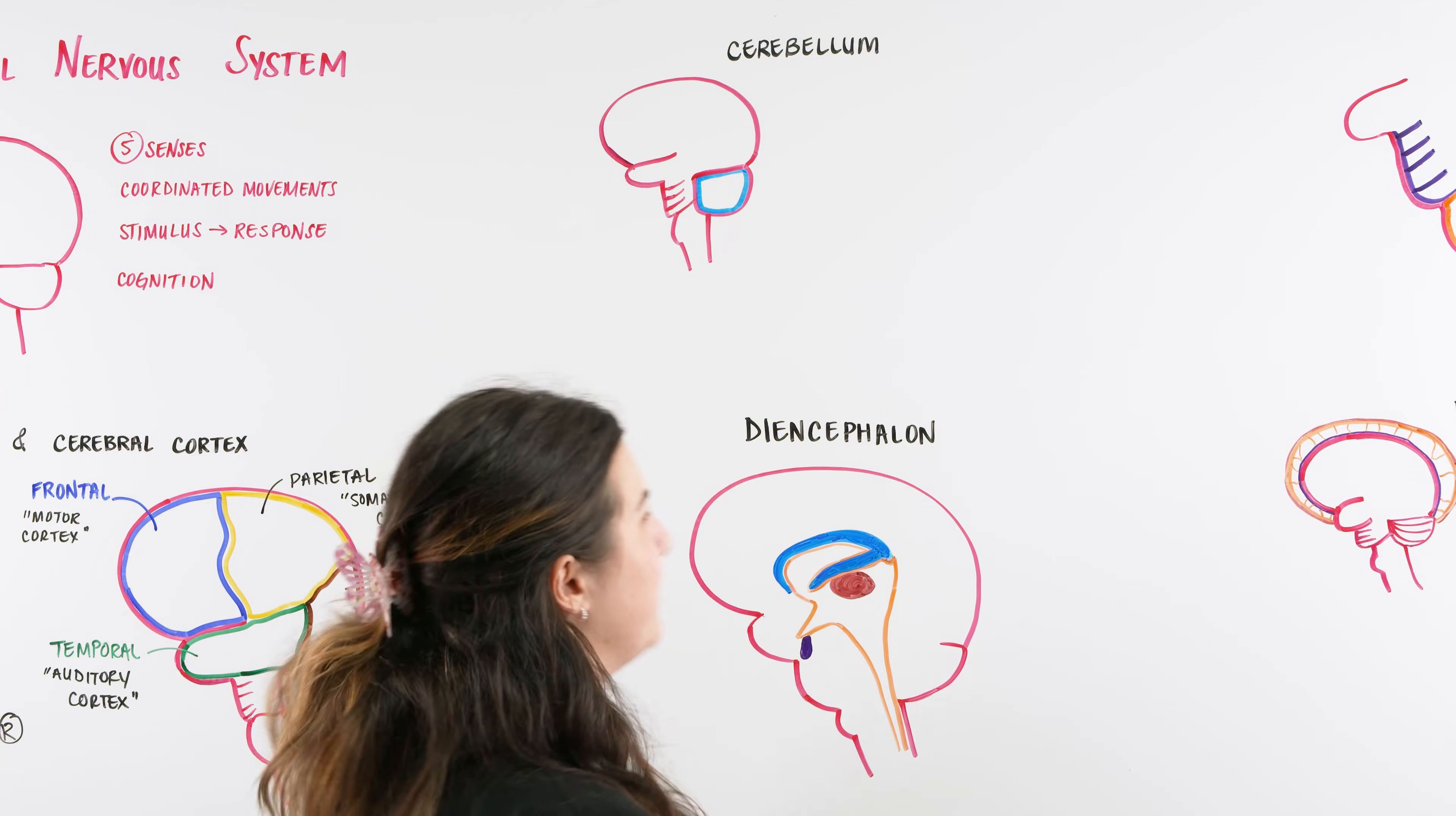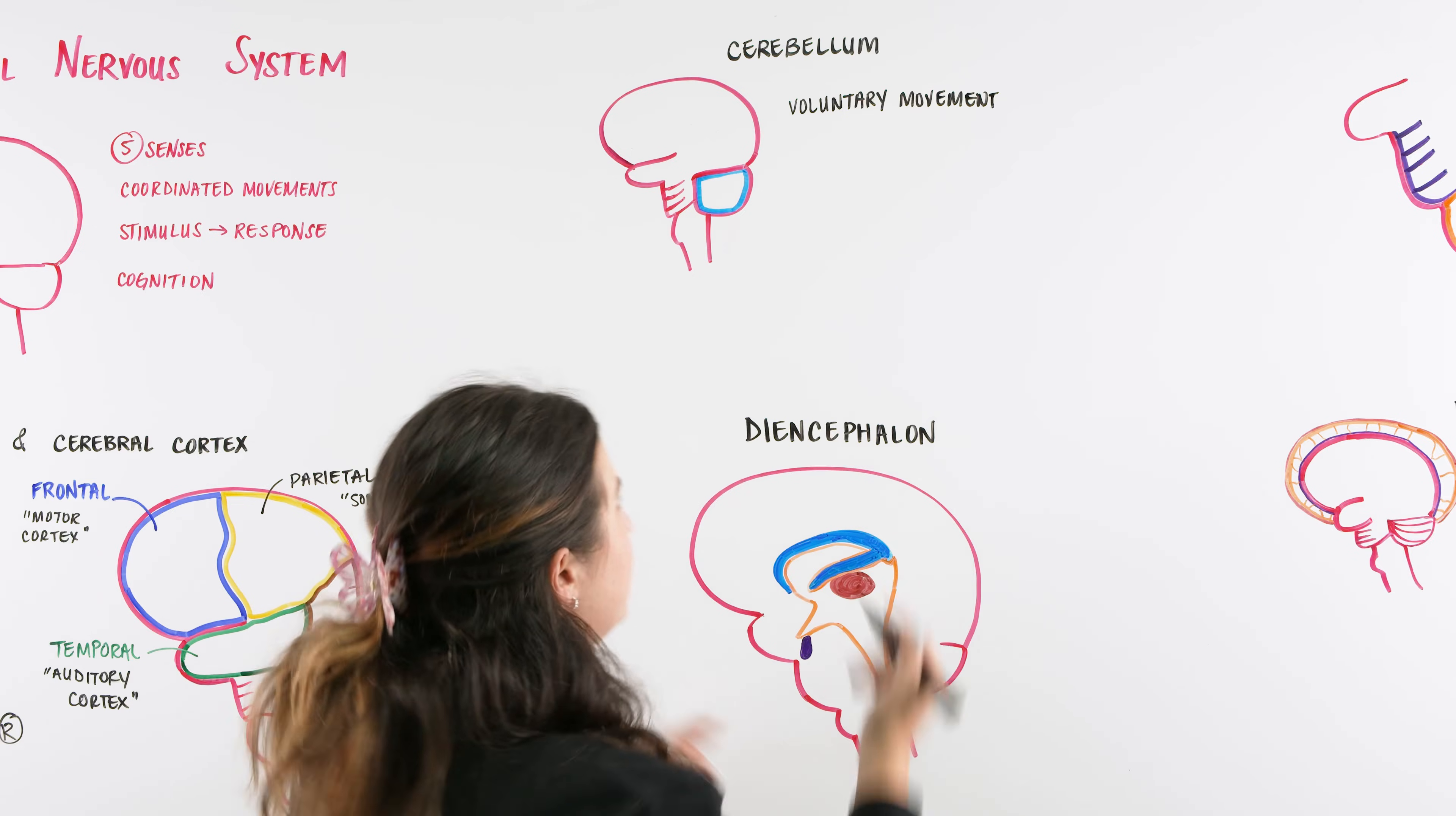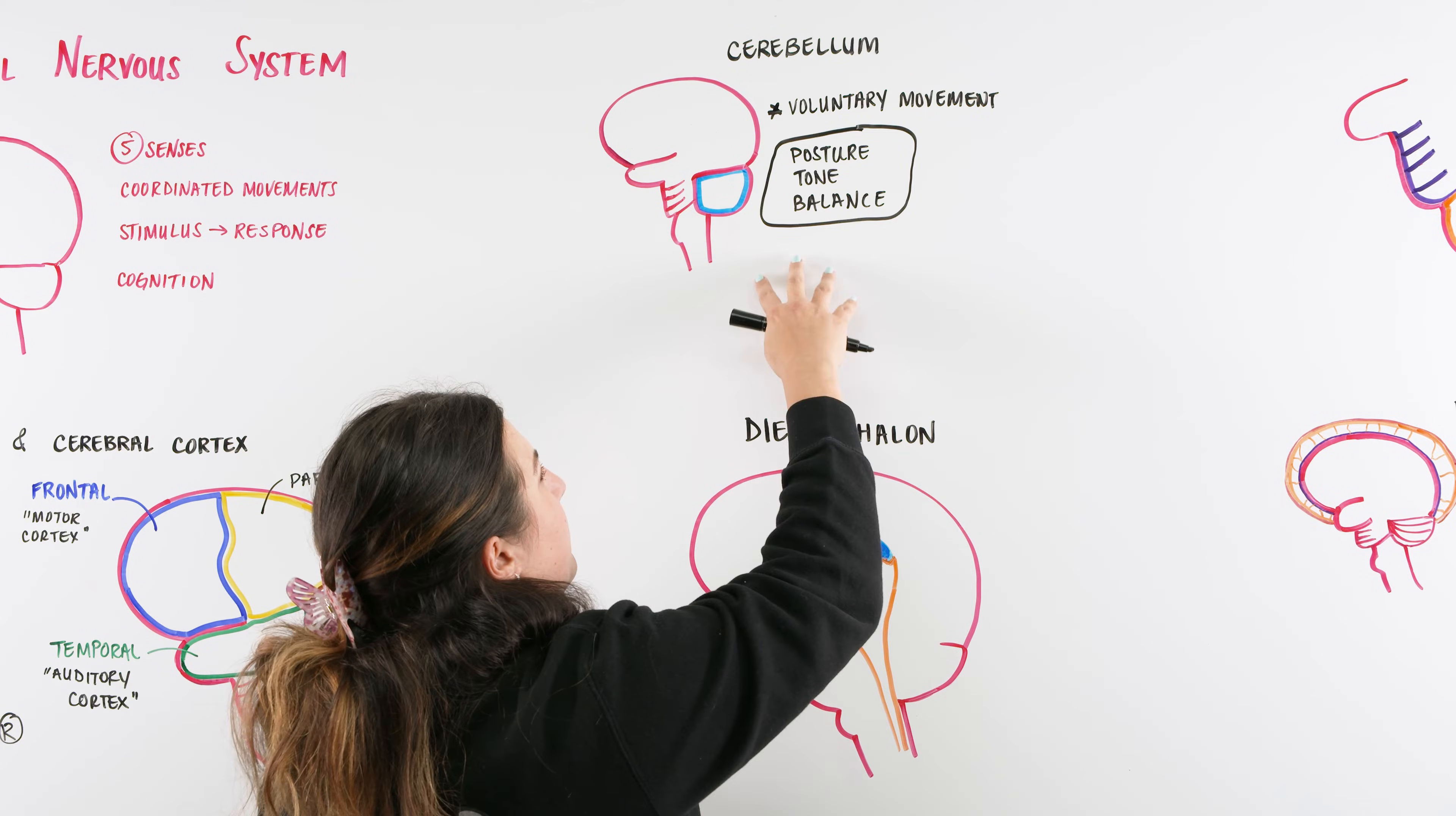Moving on to the cerebellum. The cerebellum is this portion located at the posterior part of the back of the brain. This is the area that is mostly in charge of our voluntary movement, particularly playing a part in things like our posture, tone, and balance. When you think of voluntary motion, think of highly skilled tasks like riding a bike or playing a musical instrument.